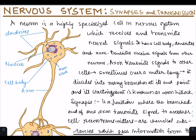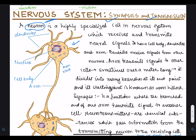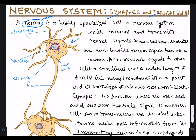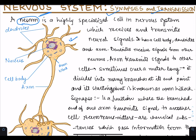Hello friends. In this video we are going to study about synapses and transmission in the heading of nervous system. First of all, we study about the structure of a neuron. This is the diagram showing the structure of a neuron, and we all know that neuron is a highly specialized cell in the nervous system which receives and transmits neural signals.